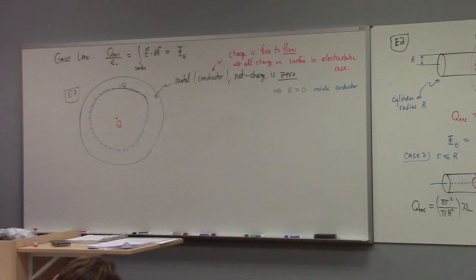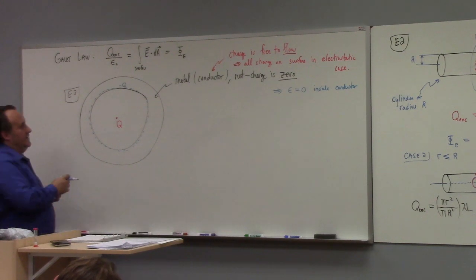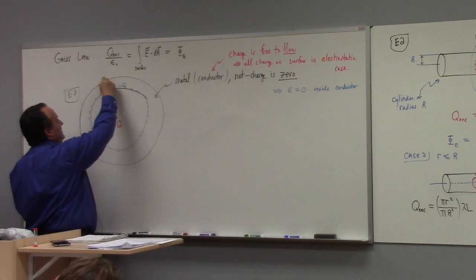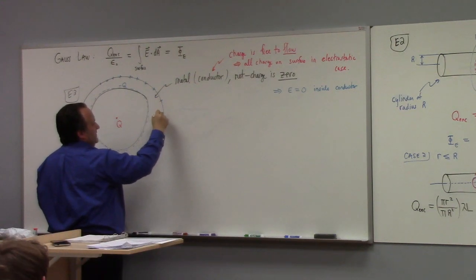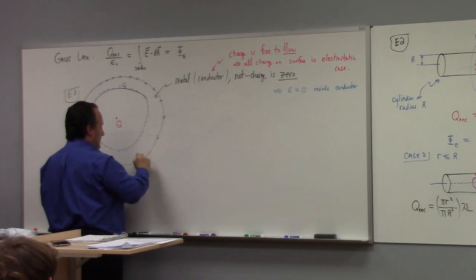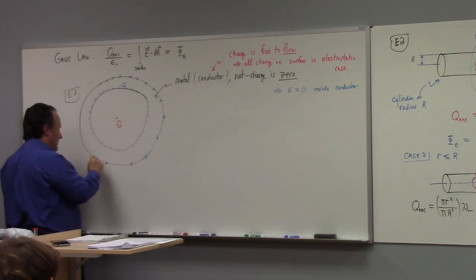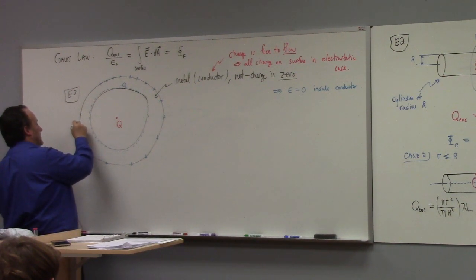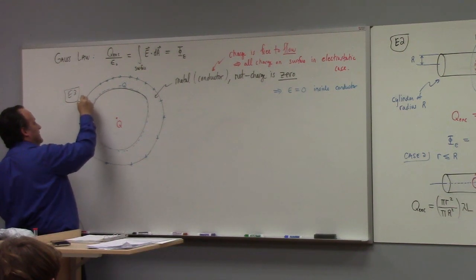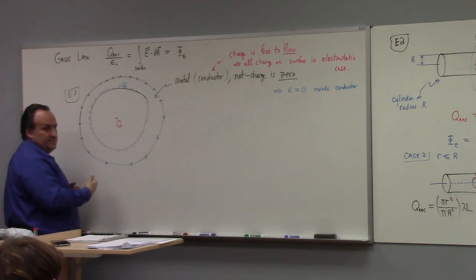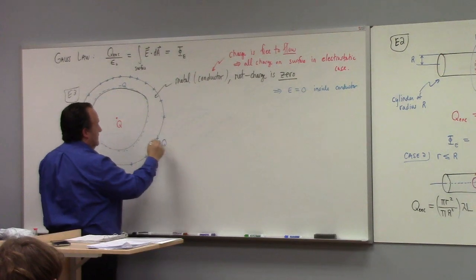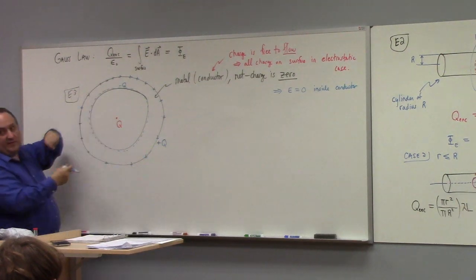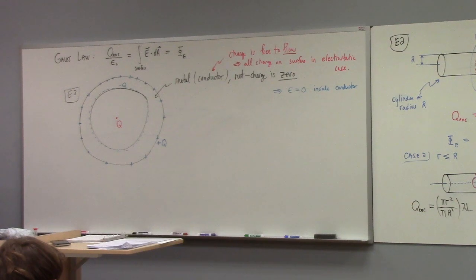Also, there has to be a positive charge on the outside. Why? Because I told us the net charge is zero. So if the net charge on the conductor is zero, and there's minus Q on the inside, there has to be plus Q on the outside — so that Q plus minus Q gives a net charge of zero.